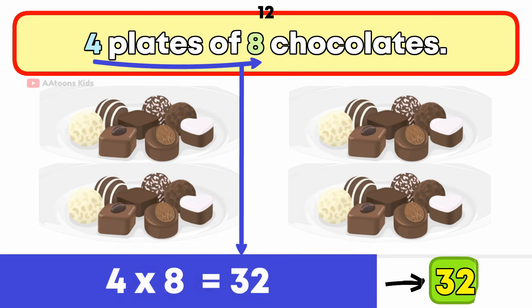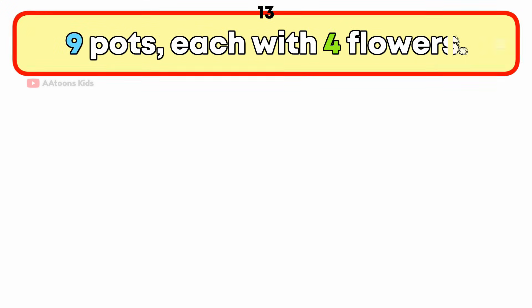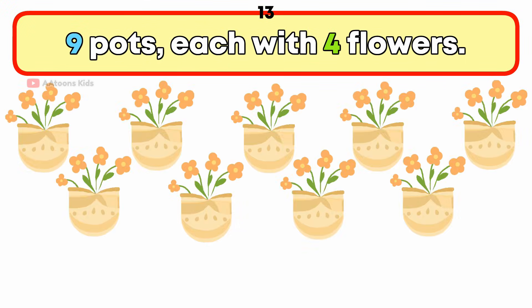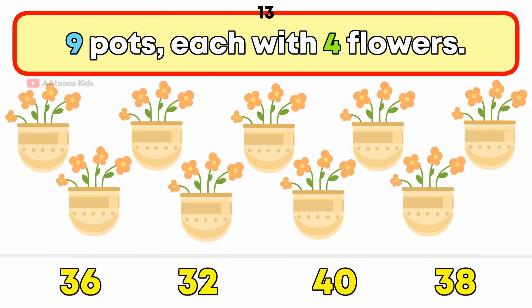9 pots each with 4 flowers. How many flowers are there in total? 36 flowers.